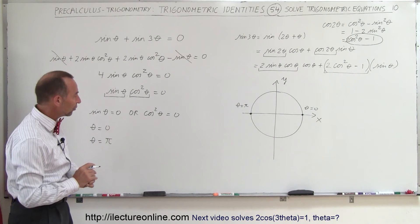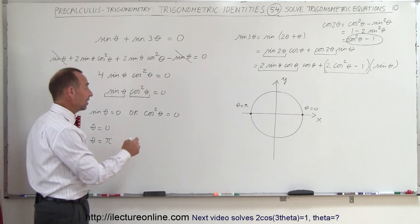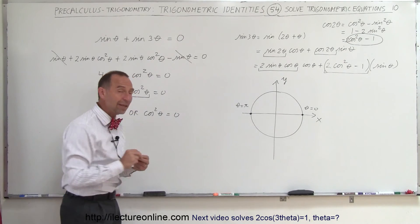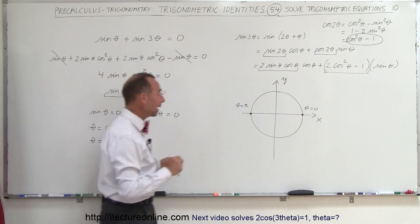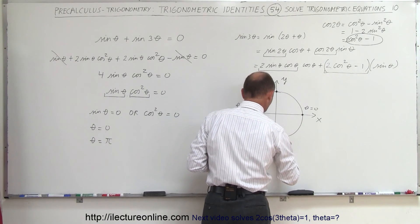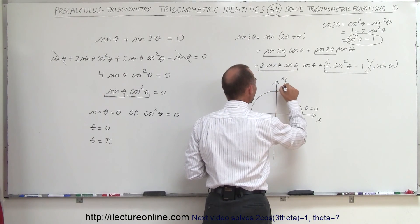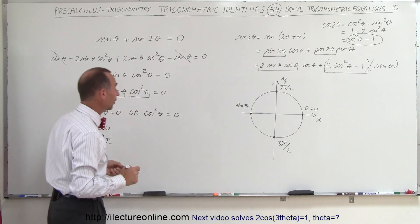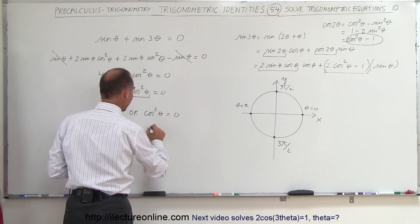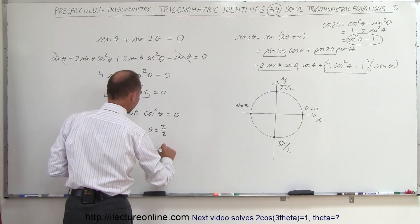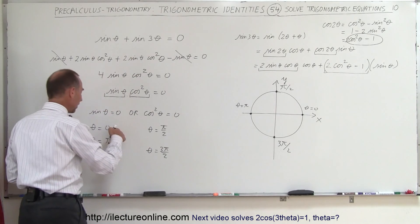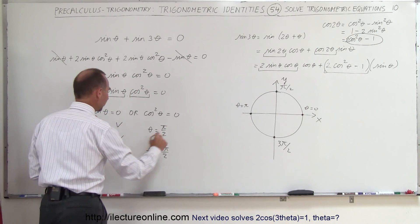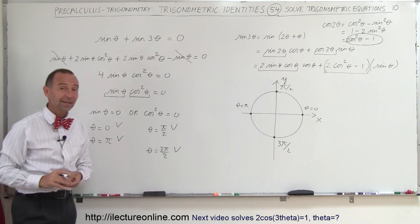For the cosine squared of theta equals zero — it doesn't matter that it's squared, because if cosine is zero then cosine squared is zero too. We're looking for the x-values on the unit circle where cosine equals zero. That occurs when theta equals pi over 2 and when theta equals 3 pi over 2. So the four total solutions are: theta equals zero, pi, pi over 2, and 3 pi over 2, and that's how we solve it.